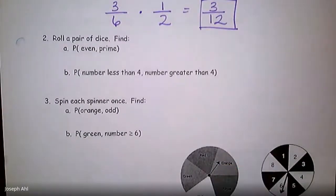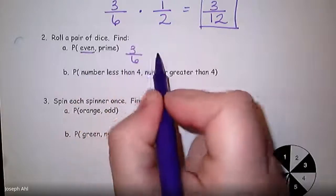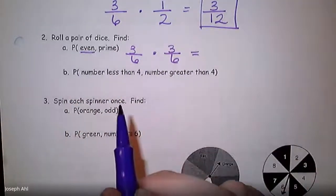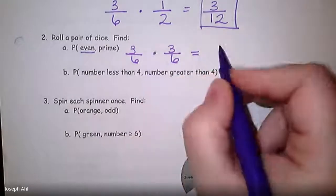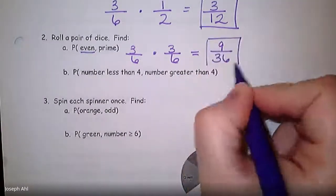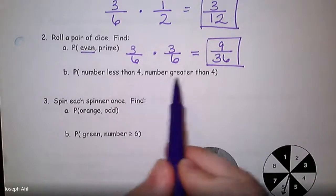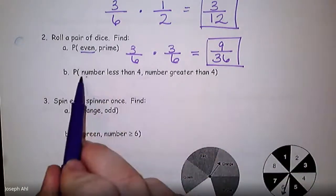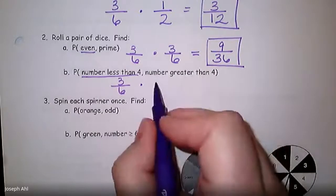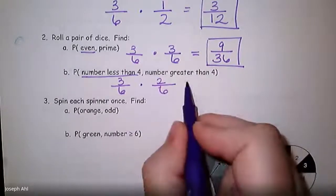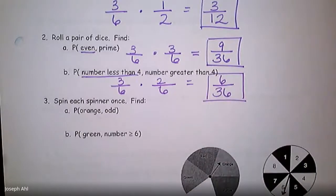Next, rolling a pair of dice: find the probability of getting an even on one and a prime on the other. Even on a die is three out of six. Prime — two, three, five — is also three out of six. Three times three is nine, and six times six is 36, giving nine out of 36. Then: what's the probability of getting a number less than four and a number greater than four? Less than four — one, two, or three — is three out of six. Greater than four — five or six — is two out of six. Total probability is six out of 36.